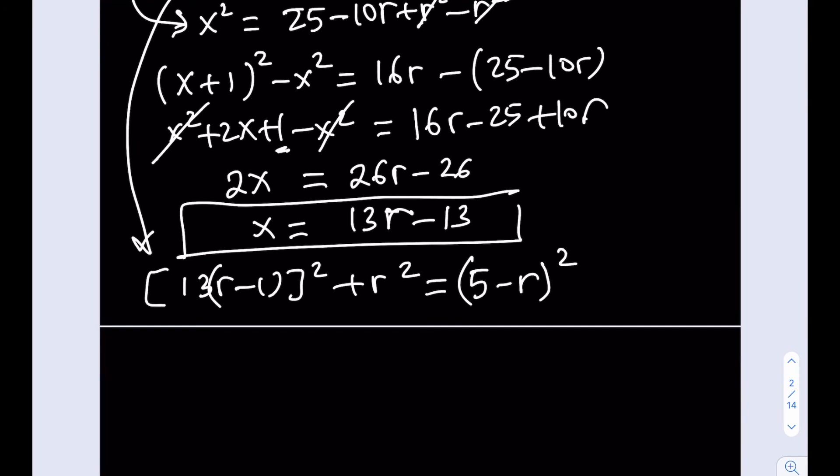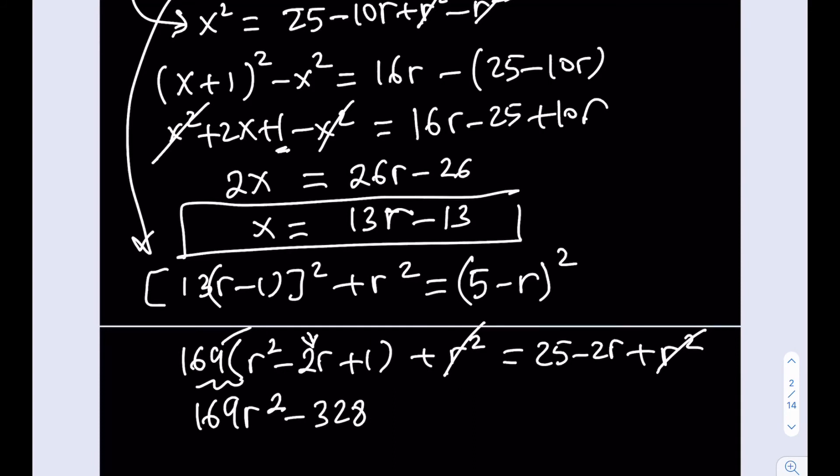I'm going to square 13, so that's going to be 169, multiply by r minus 1 quantity squared, which is r squared minus 2r plus 1 plus r squared equals 25 minus 10r plus r squared. Let's distribute this. I'm going to get 169 r squared plus r squared. Actually, I can just cancel these out. That way I'm going to end up with 169 r squared minus, now 2 times 169 is 338, but you have to subtract 25 from it. So that is 338 r plus 169 equals 25 minus 10r.